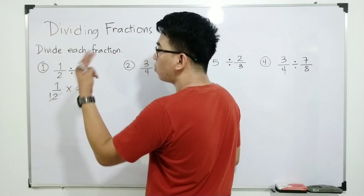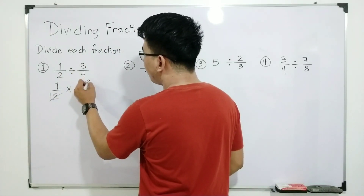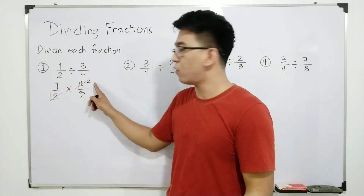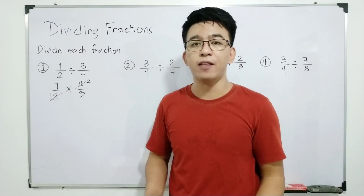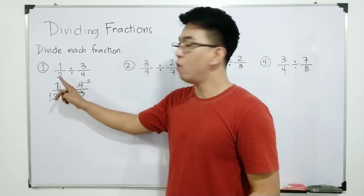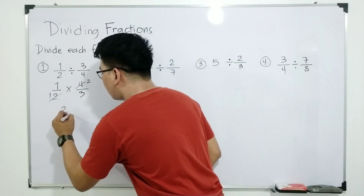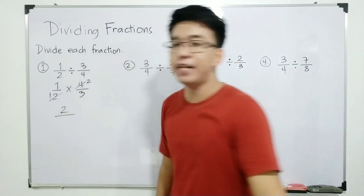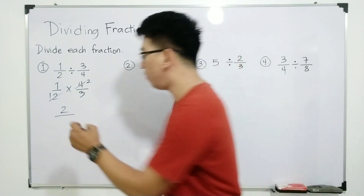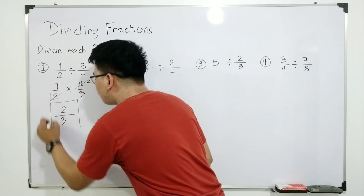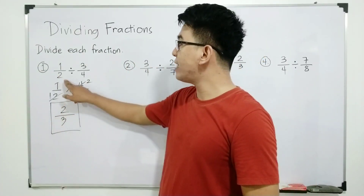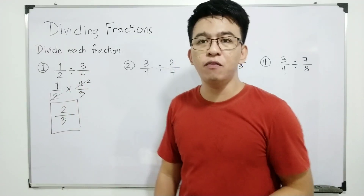We have two twos in four, so it becomes two. Now we have one and two as our numerators, and one and three as our denominators. Multiplying them: one times two is two, and one times three is three. So the answer for item number one — one half divided by three over four — is two over three.